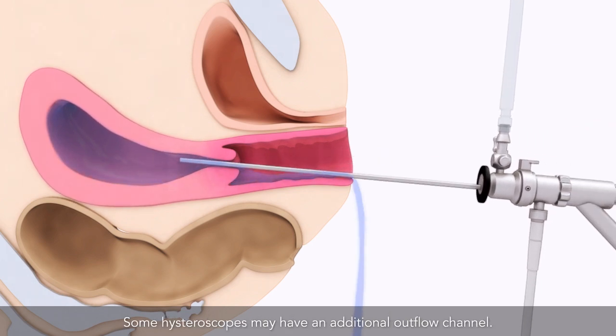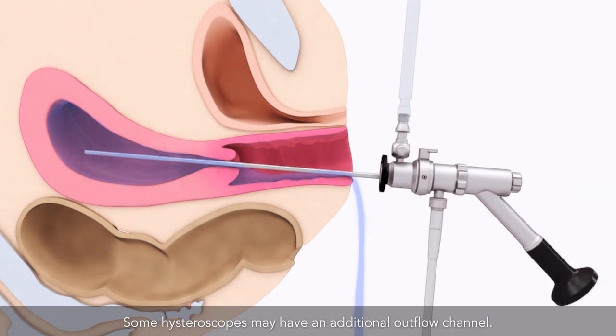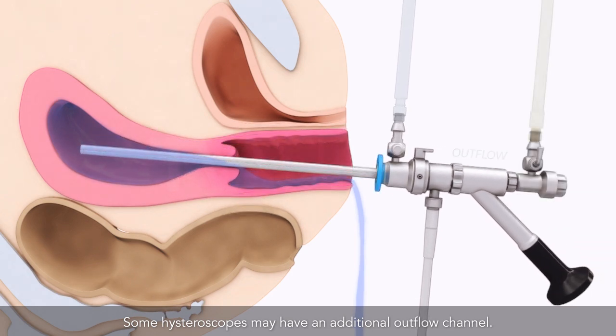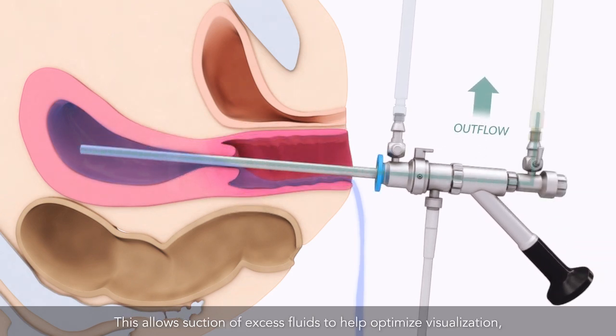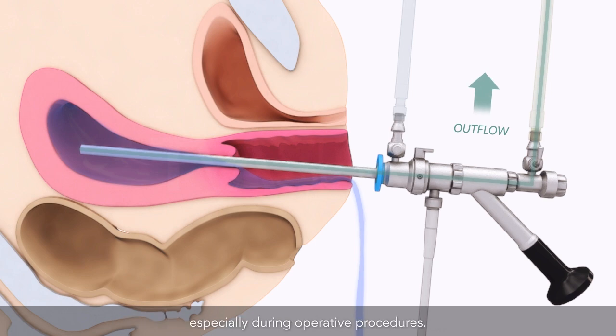Some hysteroscopes may have an additional outflow channel. This allows suction of excess fluids to help optimize visualization, especially during operative control.